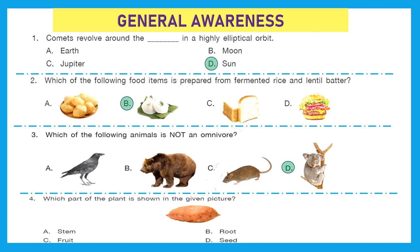Question 4: Which part of the plant is shown in the given picture? This is a sweet potato. Unlike the potato, which is a tuber or thickened stem, the sweet potato that we eat is the storage root of the plant. So this is the root of the plant — option B is the right answer.